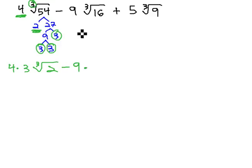Minus 9 times, factoring the 16, to 4 times 4, and the 4's to 2 times 2. Again, with the cube root, we're looking for a triplet, 1, 2, 3. A 2 comes out, and left inside the cube root is the other 2.